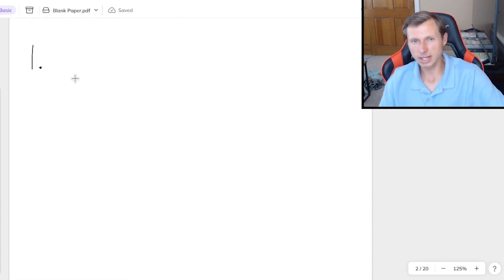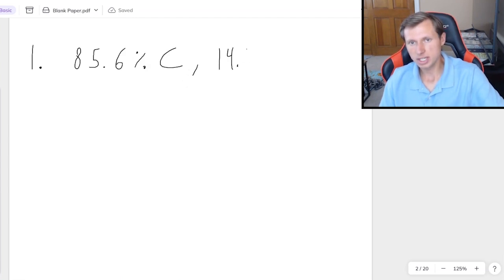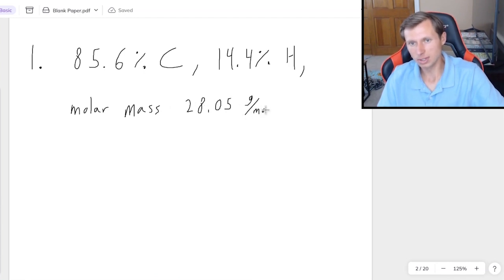I'm going to explain by giving you an example. Let's say a molecular compound by mass is 85.6% carbon and 14.4% hydrogen, and the whole compound has a molar mass of 28.05 grams per mole. The only difference between this and an empirical formula is I wouldn't give you the molar mass for empirical. You would just have the percentages. But here's the easiest way to solve this question.